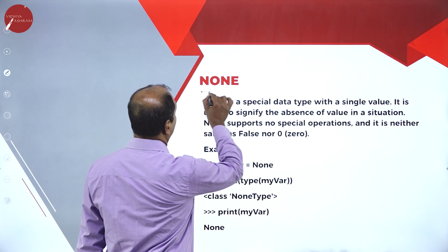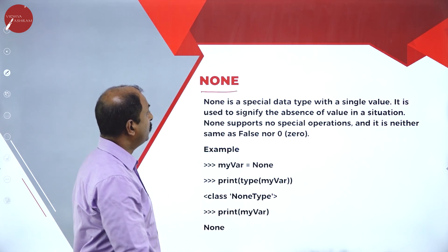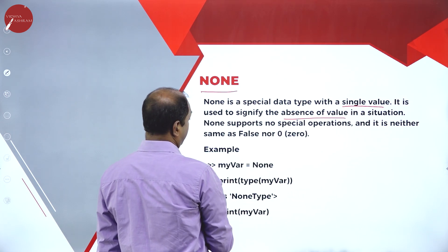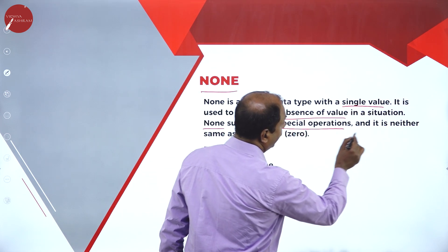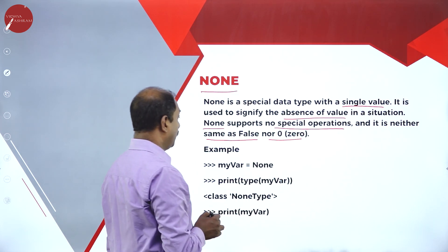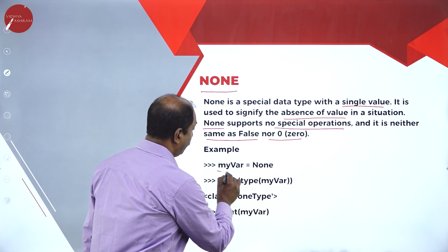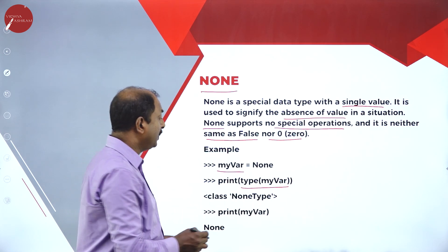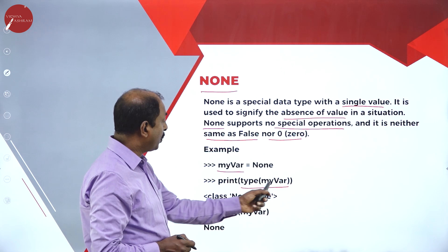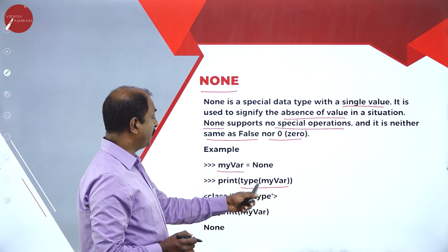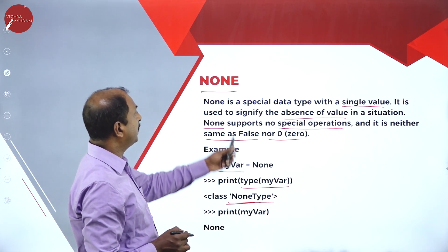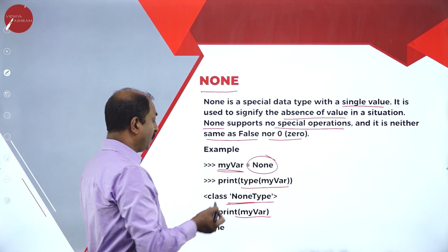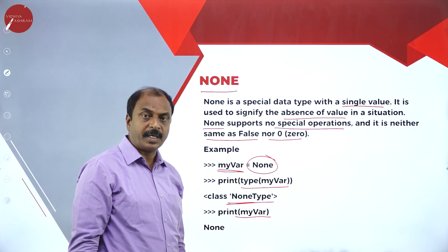In the next slide we will discuss None. What is None? None is another data type — it is a special data type with a single value. It is used to signify the absence of a value in a situation. None supports no special operations and it is neither the same as false or zero. For example: myVAR equals None. We are assigning None to this variable. Print type myVAR — type is the command, and accordingly it is going to print 'class NoneType'. If you say print myVAR, it is going to print None. None is one other data type in Python.